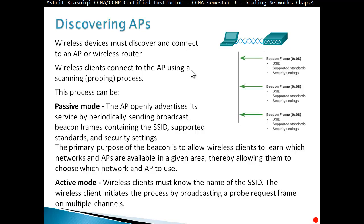Active mode: when you use scanning, wireless client must know the name of the SSID. The wireless client initiates the process by broadcasting probe request frames on multiple channels. This is when you scan - when you set your mobile phone to scan for WiFi around here, your wireless mobile or smartphone will send the probe saying to the access point: everybody send me what's your SSID, what standards you support, what's your security settings.